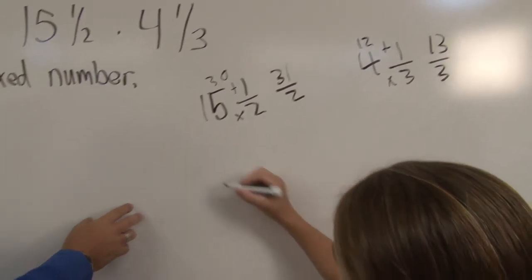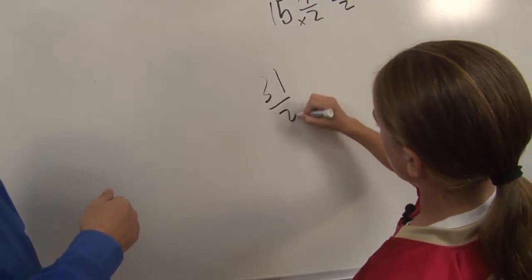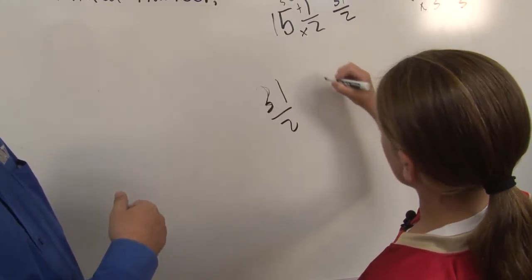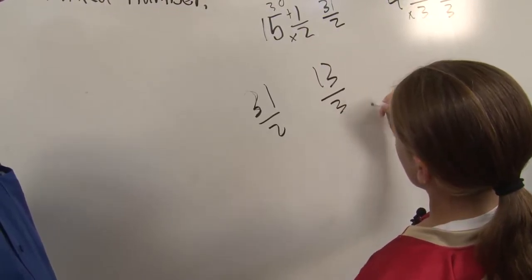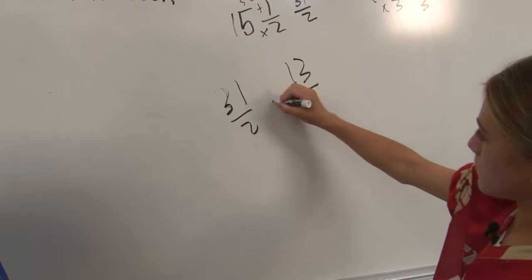All right, so let's move down here. So the first one we had was 31 over 2, and the other one was 13 over 3. And what would you like to do to those now? Multiply because they cannot be cross-simplified, so just multiply.